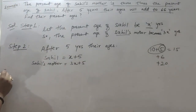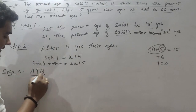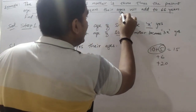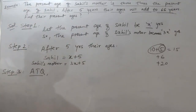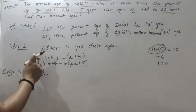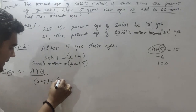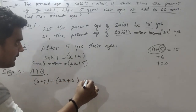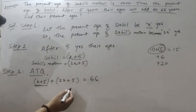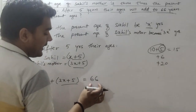The third step is comparing their ages according to the question — ATQ means 'according to question'. The question states that after 5 years their ages will add up to 66. The age of Sahil after 5 years is X plus 5, and the age of Sahil's mother after 5 years is 3X plus 5. We add both ages and set the sum equal to 66.